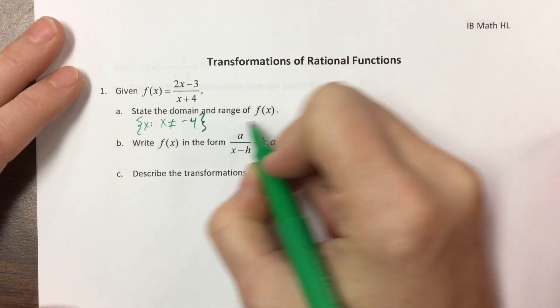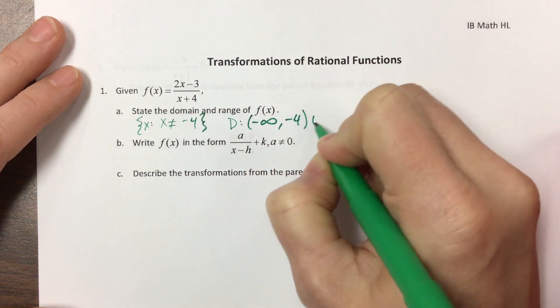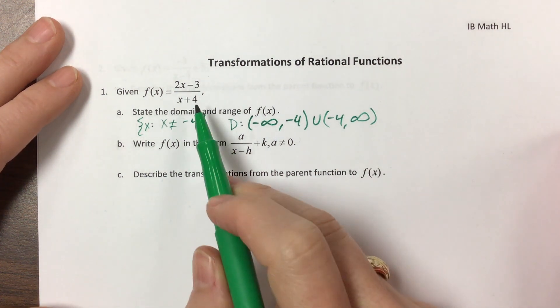Or you can tell me that the domain goes from negative infinity to negative four, and then you pick it up again and go from negative four to infinity. So it's everything except negative four.